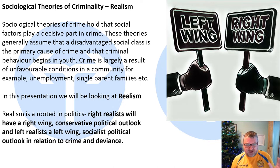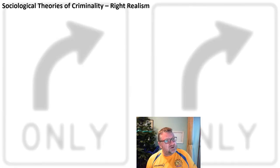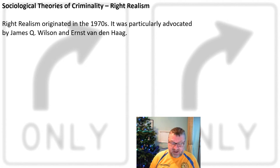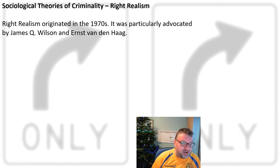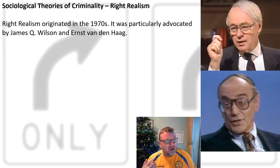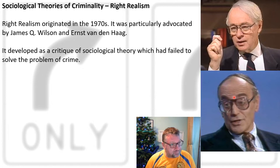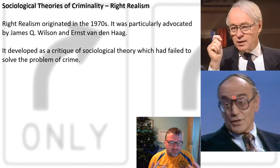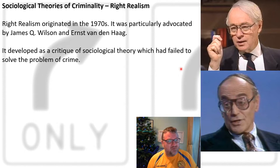They are very much polar opposites of each other. Let's start by looking at right realism. It originated in the 1970s and was particularly advocated by right realist sociologists such as James Q. Wilson and Ernst van den Haag. Basically, it developed as a critique of sociological theory, which had failed to solve the problem of crime. Right realists believed that sociological theories of crime hadn't solved the issue, so right realism developed as a response to that.